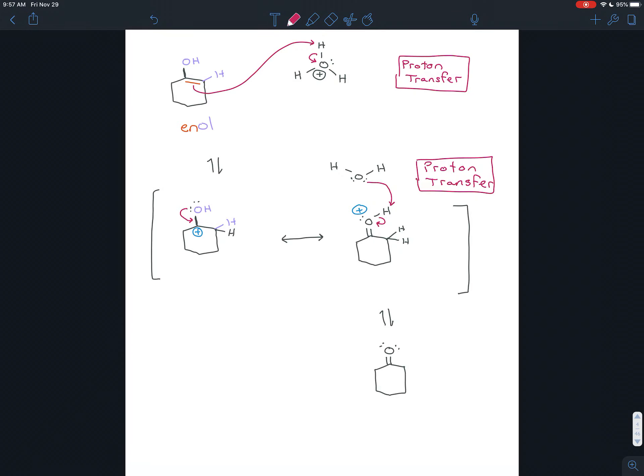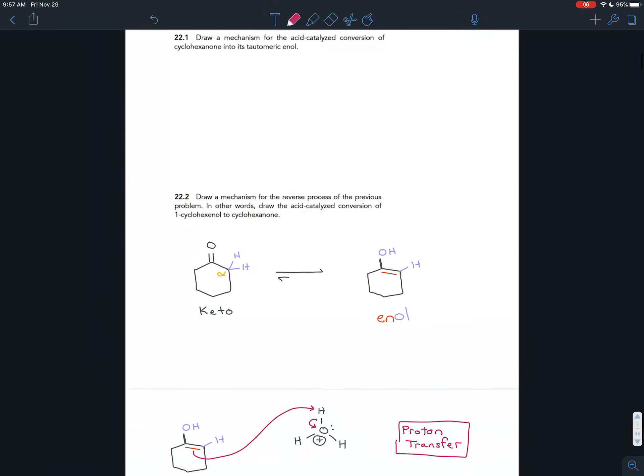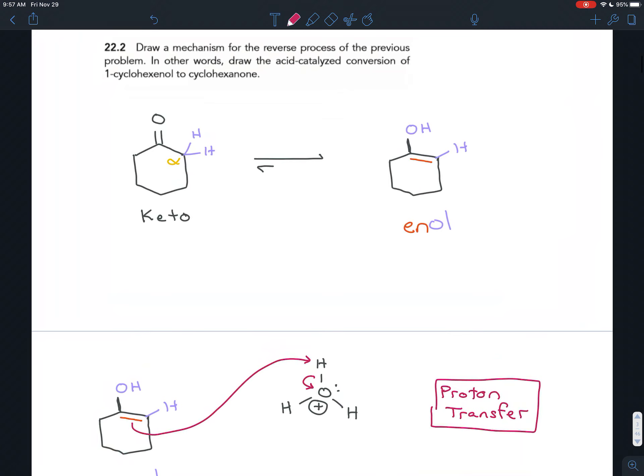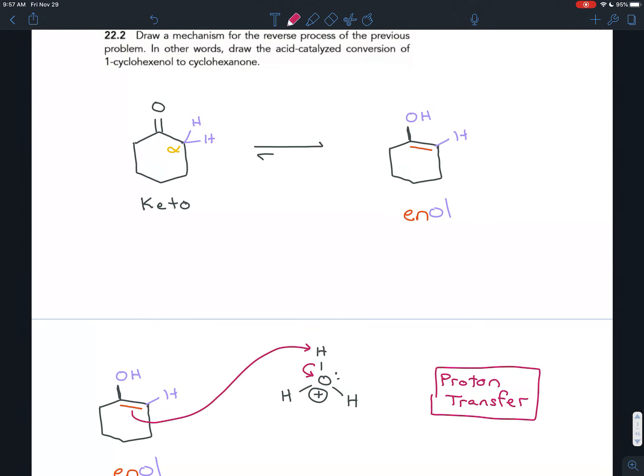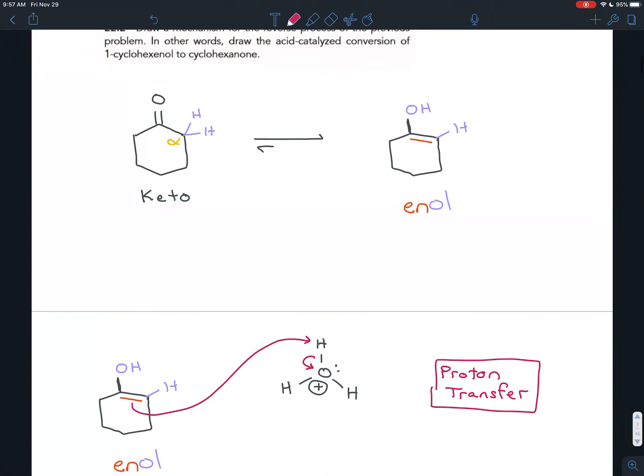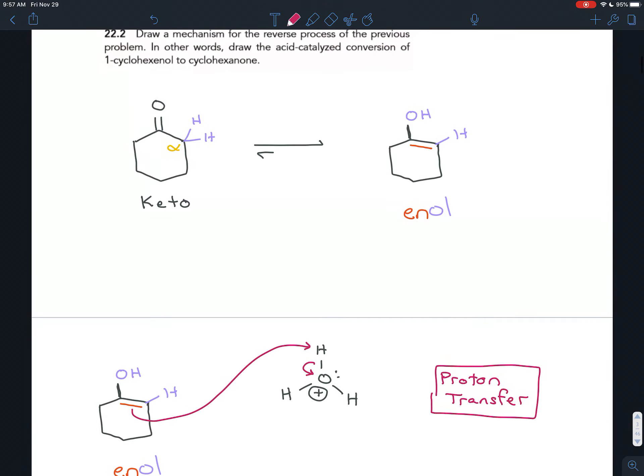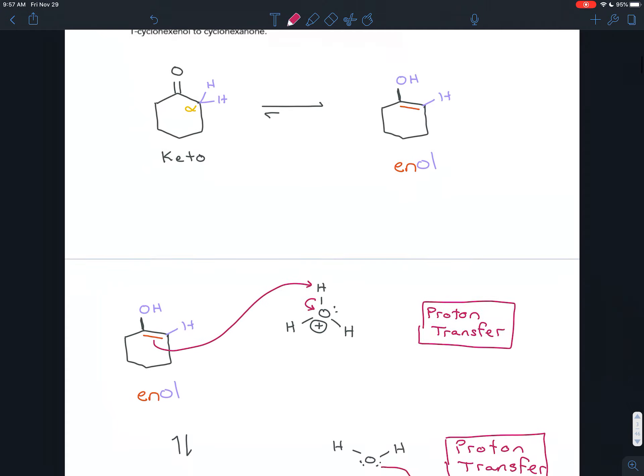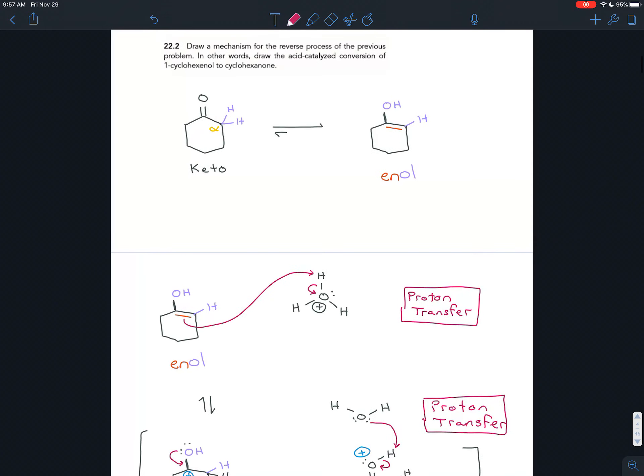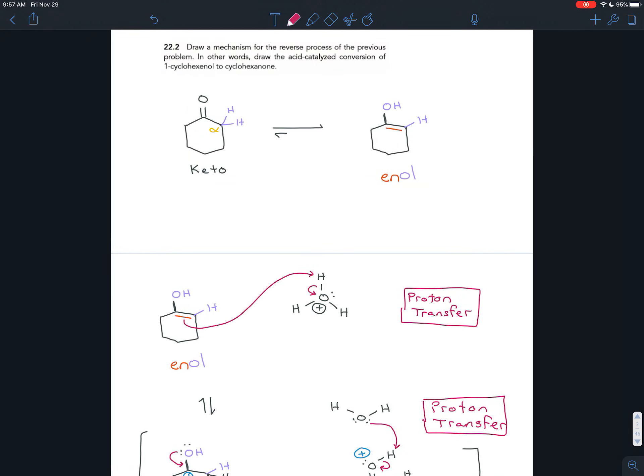So the big takeaway from this and the last video is that ketones and enols, or for that matter aldehydes and enols, always exist in an equilibrium. Anytime you have one, you'll have the other. And what that means is if you have a ketone, the alpha carbon can act as a nucleophile because it can use these sort of pi electrons of the enol to do that. And that is exercise 22.2.